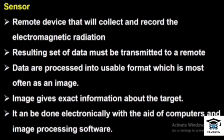The remote sensing sensor collects and records the electromagnetic radiation. When we receive the electromagnetic radiation in the form of information, it collects and records that data. The resulting set of data must be transmitted to a remote location, where it is used to produce the image format.